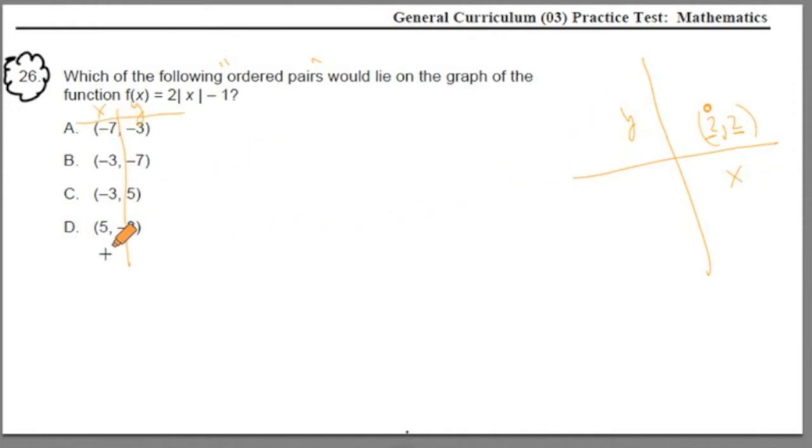The question is asking, which one of these ordered pairs or points lies on the graph of this function? Now there's a bunch of ways of solving this. I'm going to solve it around a conversation around the word function. In math, a function describes the relationship between two variables.